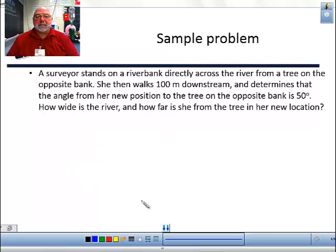Okay, so here's a sample problem. We have a surveyor that stands on a riverbank directly across the river from a tree on the opposite bank. She then walks 100 meters downstream and determines that the angle from her new position to the tree on the opposite bank is 50 degrees. How wide is the river and how far is she from the tree in her new location?